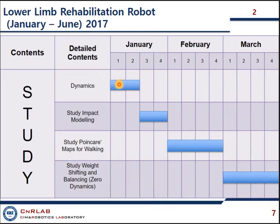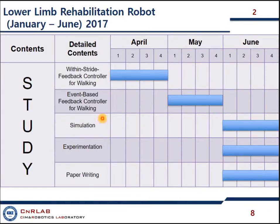This is my schedule. I am going to study dynamics in January, which we have already discussed. Today I would give an overview. In the next two weeks, I would study impact modeling. Then in the next month, I would describe the Poincare maps for walking. In March, I would describe weight shifting and balancing, that is zero dynamics. In April, I would study the within-stride feedback controller for walking. And in the next week, I would study event-based feedback controller for walking.